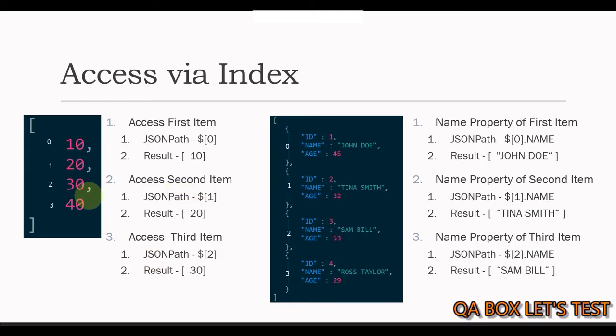Now let's replace these numbers with objects to start making things more realistic. This array looks like a collection of person objects where each person object has three properties: ID, name, and age. Please also note that JSON path expression is case sensitive, which means that name in lower case is different from name in upper case.